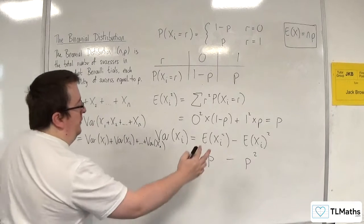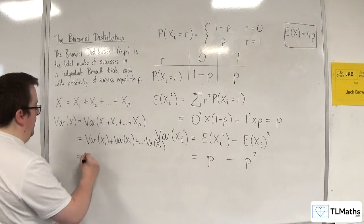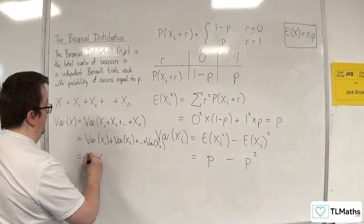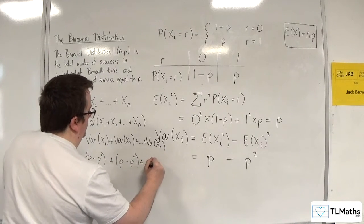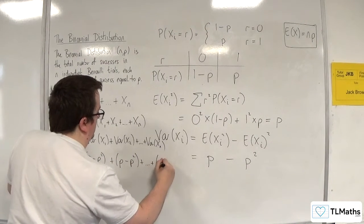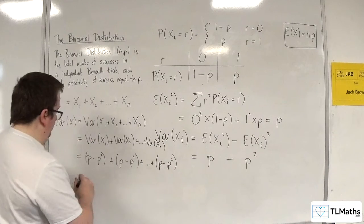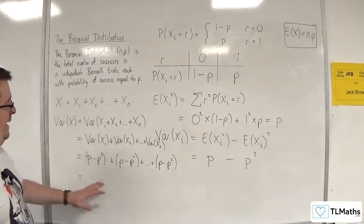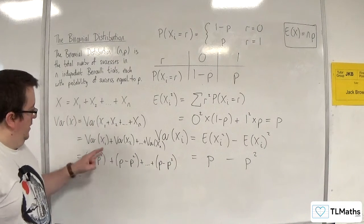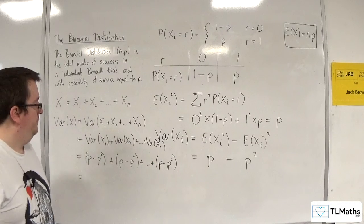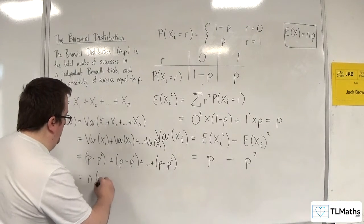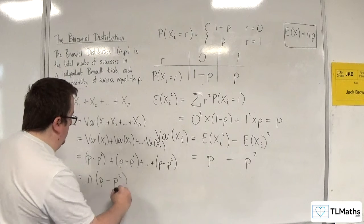Each of those has a variance of p minus p². So I've got (p - p²) + (p - p²) + ... + (p - p²). How many do I have? 1, 2, 3, 4, 5, 6, 7, all the way up to n. So I've got n lots of (p - p²).